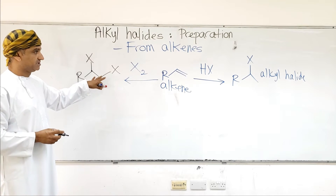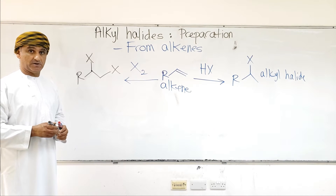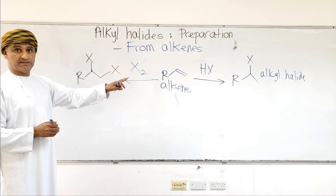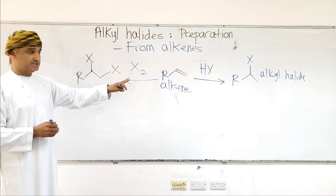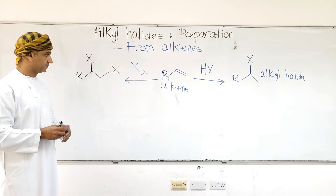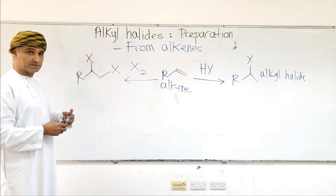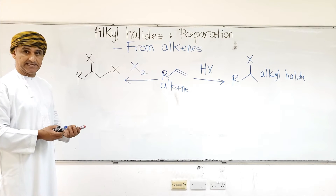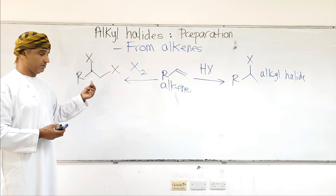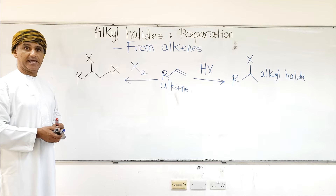These two reactions — addition of HX to alkenes and addition of X2 to alkenes — are known to us from the chemistry of alkenes. Another method is to take an alkene, but this time you don't add HX or X2; instead you add a reagent such as NBS.